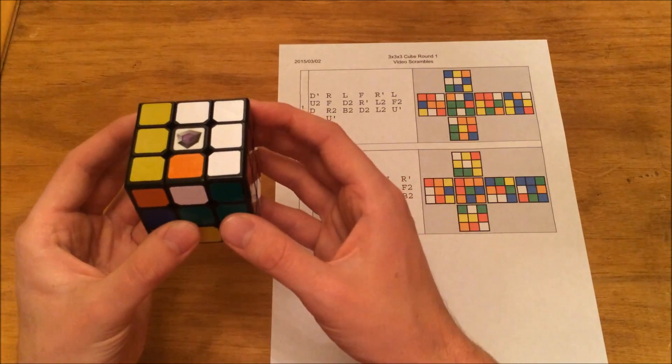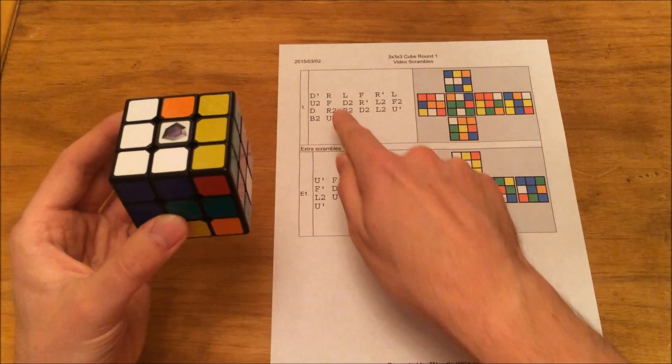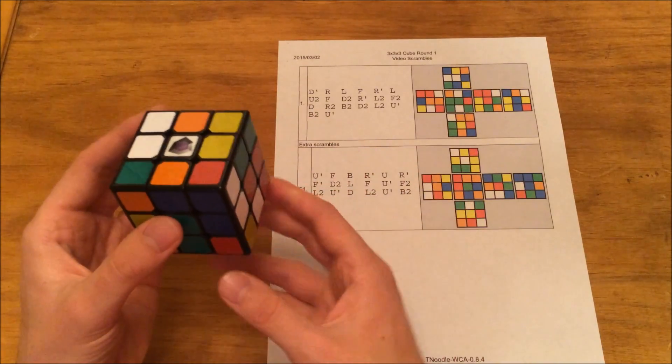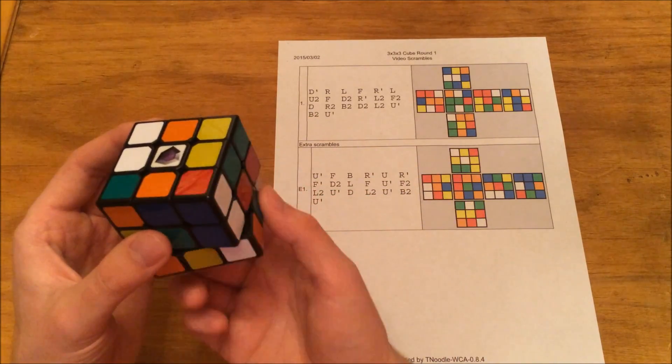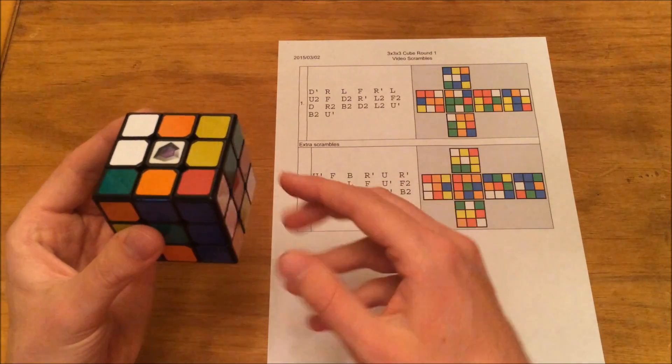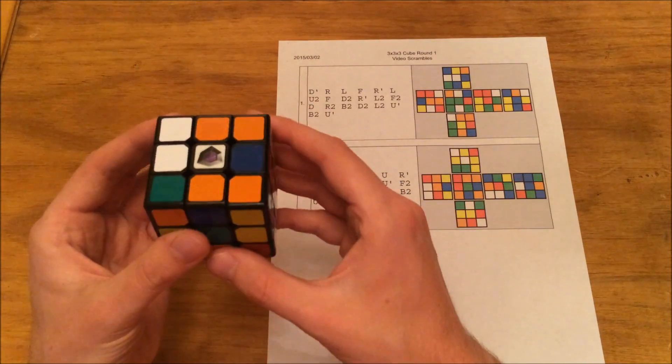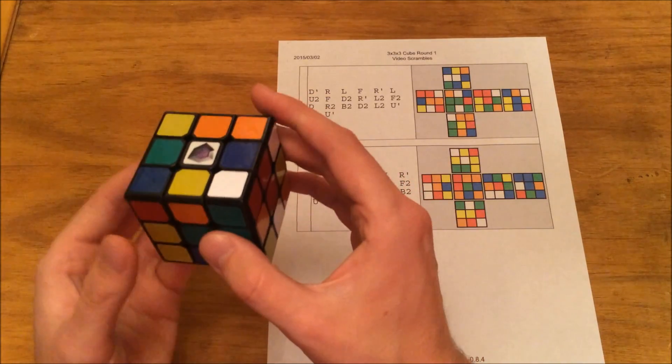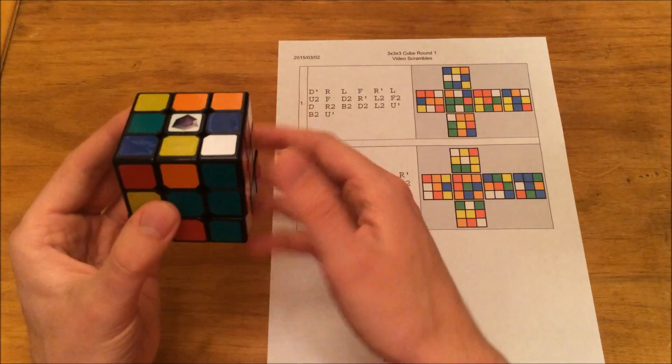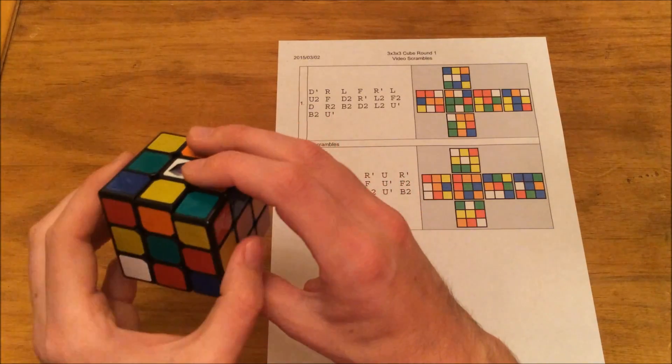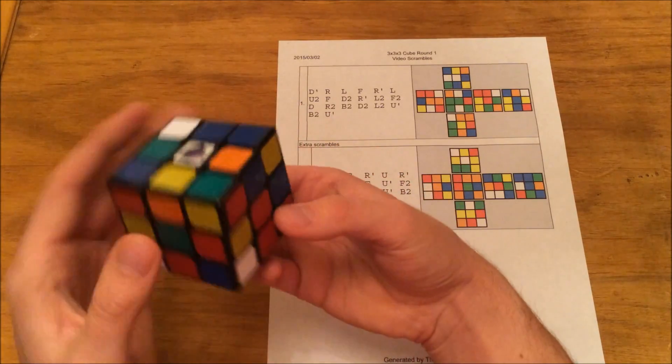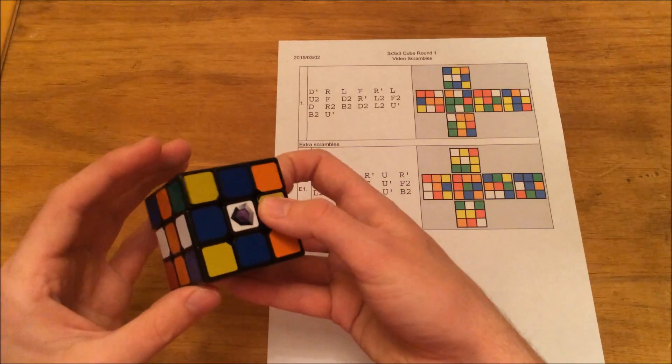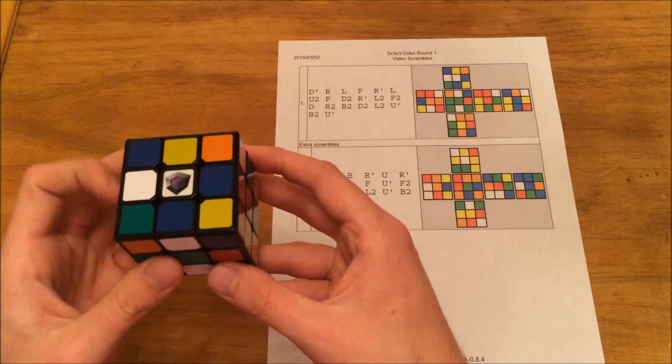Remember U2 means the top turns twice in either direction. Then we have an F. Then we have a D2, so turn the bottom twice in any direction. Then we have an R prime. We have an L2. We have F2. We have a D. We have R2. We have B2, D2, L2, U prime, B2, U prime.